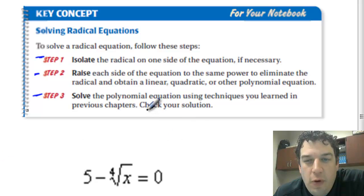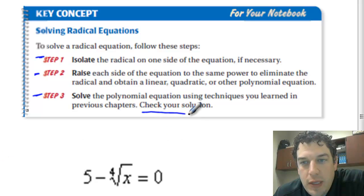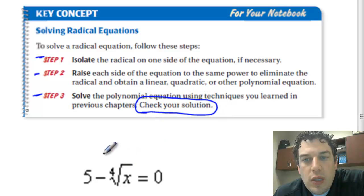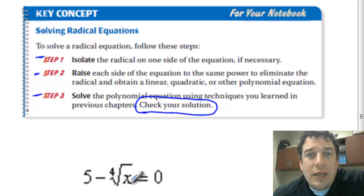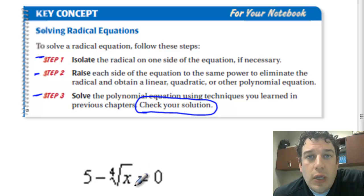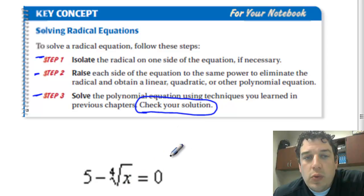The fourth step, which is really step 3B, is to check your solution. Checking your solution is probably the most important thing, because in some of these situations we could have a negative number. If we get a negative number, we can't take an even root of a negative number — that's our domain rule number two. So we've got to be careful about that. Always check your solution when solving radical equations.